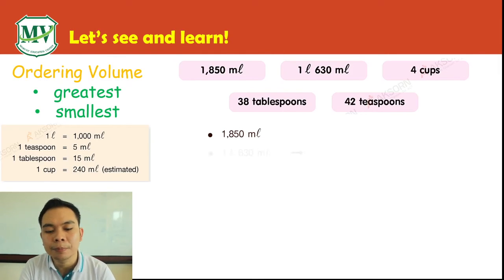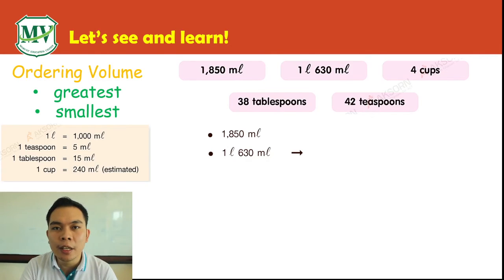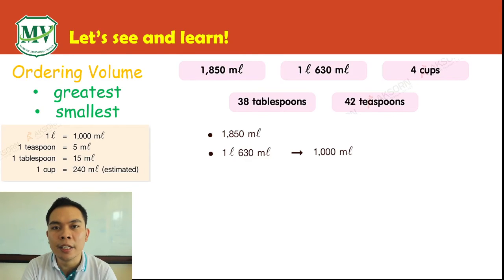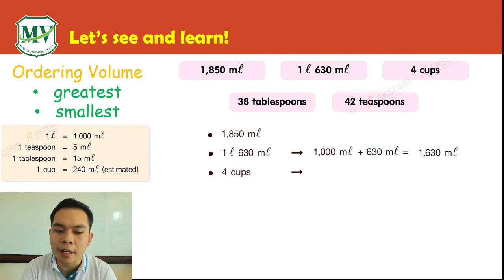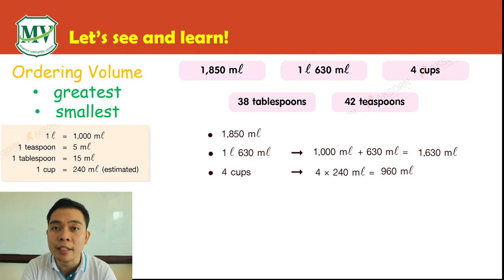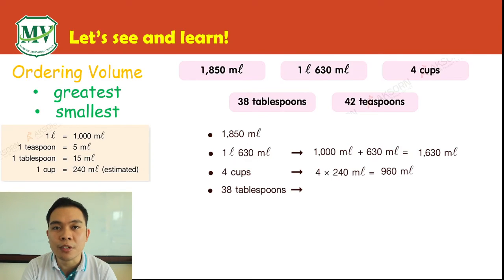One cup equals 240 milliliters as estimated. Now, 1850 milliliters stays the same. Next, 1 liter 630 milliliters: 1000 milliliters plus 630 milliliters equals 1630 milliliters. Next, 4 cups: 4 times 240 milliliters equals 960 milliliters.